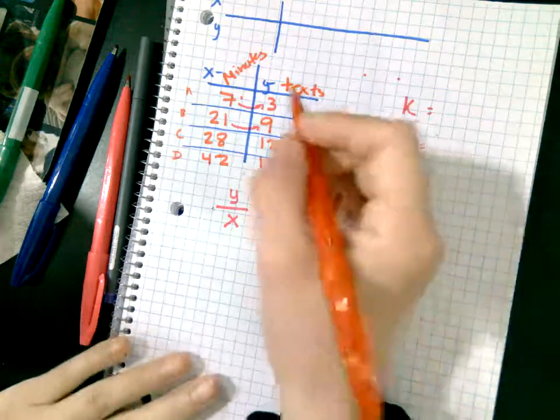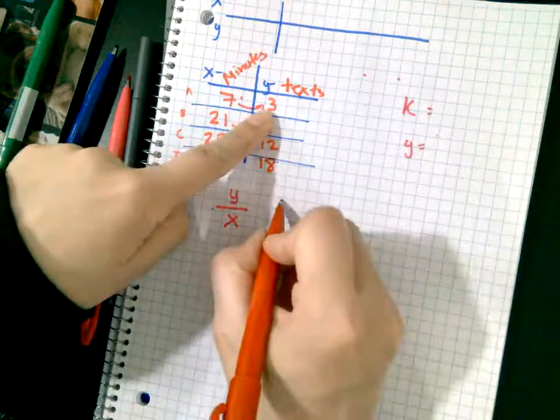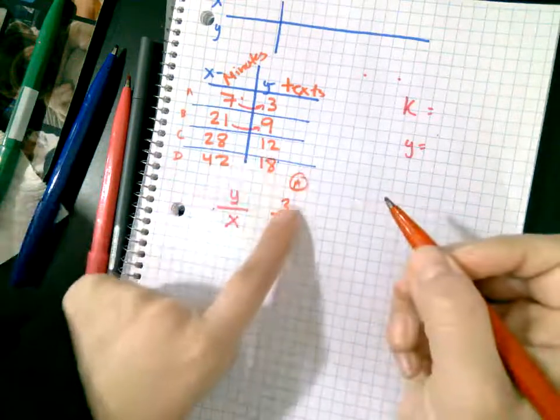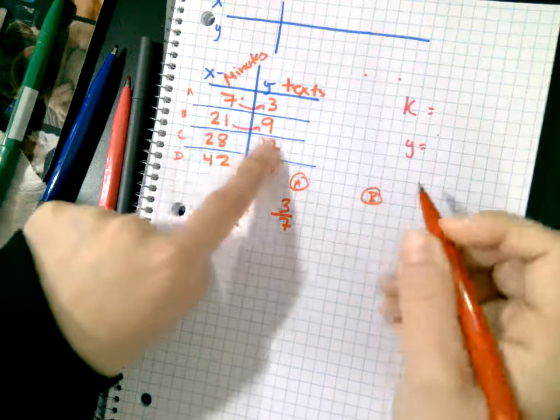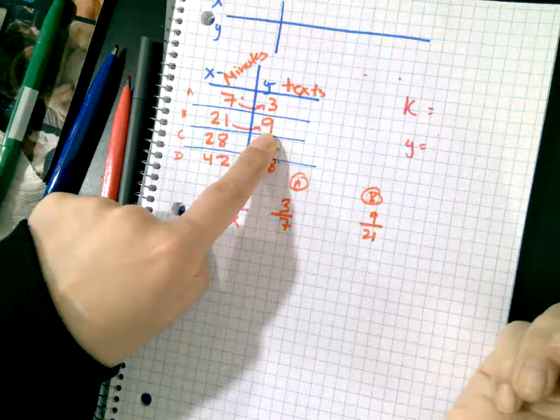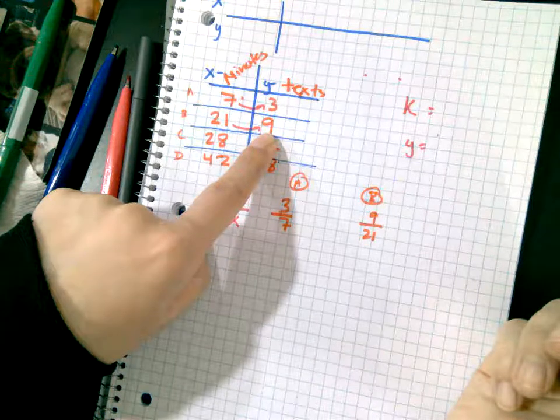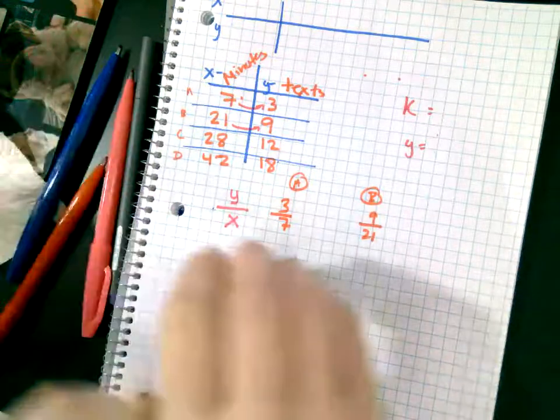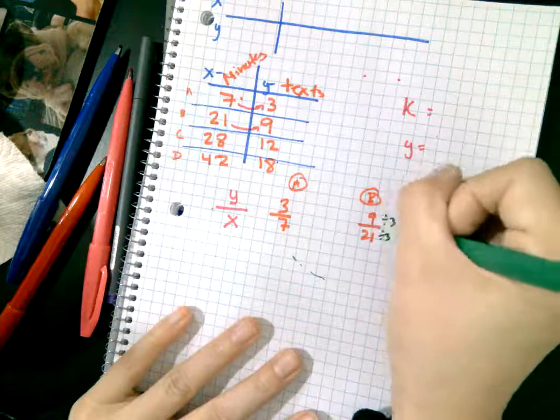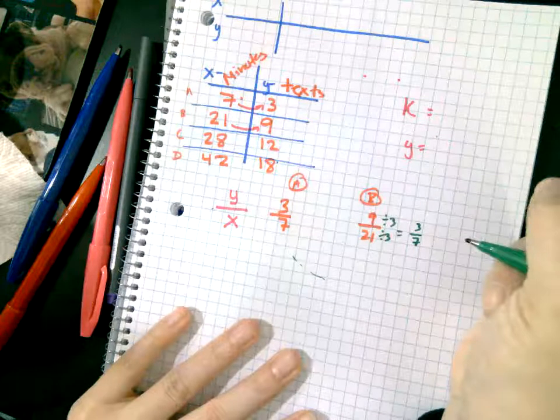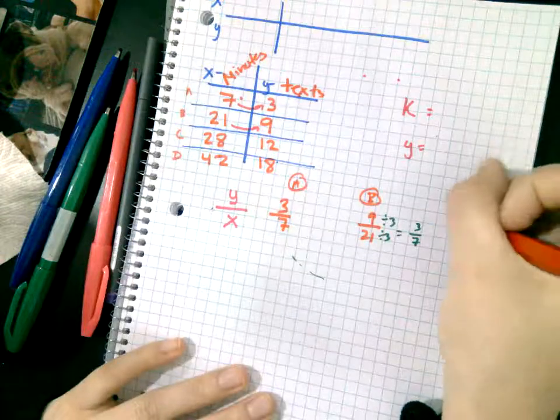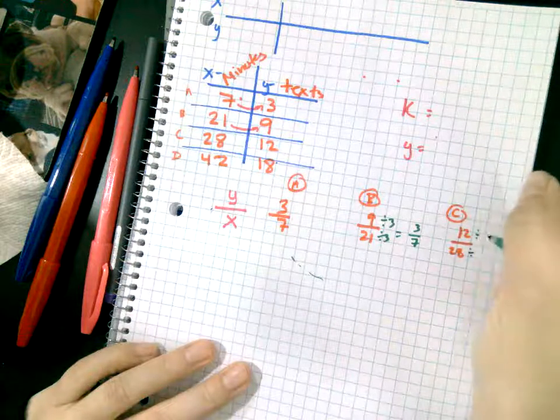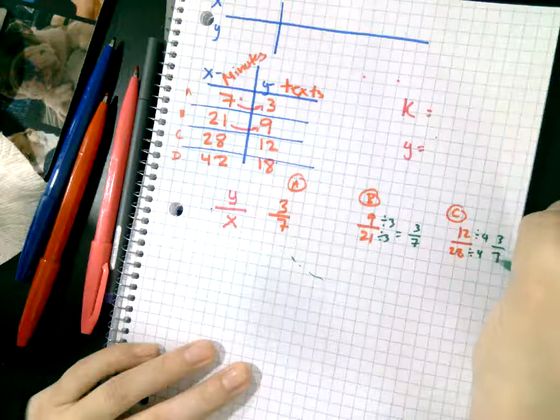Let's do all of them. The first one is y over x, so that would be 3 over 7. Can I simplify it? Nope. What about B? It would be 9 over 21. Number one mistake kids do is they'll put x over y. Make sure that you always put it as y over x. I'm going to simplify this, divide by 3, I get 3 over 7. Let's do C. 12 over 28, divide by 4, 3 over 7.